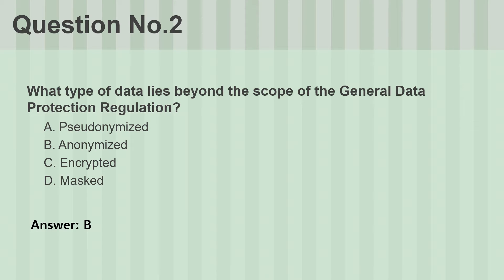Question number two. What type of data lies beyond the scope of the General Data Protection Regulation? A. Pseudonymized. B. Anonymized. C. Encrypted. D. Masked. Answer: B.